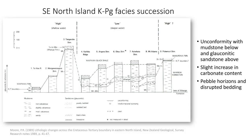Phil Moore did a lot of work on the KT boundary on the east coast of the North Island and noticed some patterns quite consistent with tsunami impact: an unconformity everywhere, an erosional contact, glauconitic sandstone above — just like at Tora — and an increase in carbonate content noted in several sections. The only way to get an increase in carbonate content when forams and calcareous nanofossils have died out is if it's Cretaceous carbonate being brought in — but that hasn't been studied in detail. He also noted several pebble horizons and disrupted bedding at various places.